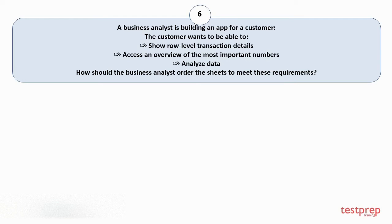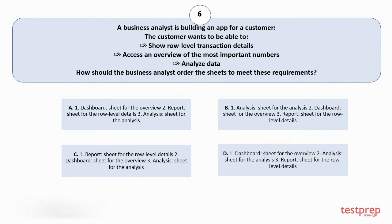Question number 6. A business analyst is building an app for a customer. The customer wants to: 1. Show role-level transaction details. 2. Access an overview of the most important numbers. 3. Analyze data. How should the business analyst order the sheets to meet these requirements? Your options are: A. 1. Dashboard sheet for the overview. 2. Report sheet for the role-level details. 3. Analysis sheet for the analysis. B. 1. Analysis sheet for the analysis. 2. Dashboard sheet for the overall details. The correct answer is option C.